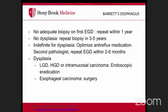If biopsies were inadequate on the first EGD, repeat within one year. If no dysplasia, repeat in three to five years. If indefinite for dysplasia, optimize anti-reflux medications, get a second pathology opinion, and repeat EGD with biopsies in two to six months. If low-grade, high-grade dysplasia, or intramucosal carcinoma is found, endoscopic eradication therapy can be considered.